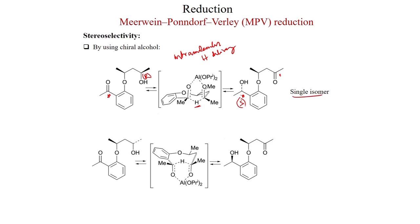On the other hand, if you consider the alcohol where the stereochemistry is just opposite — earlier it was R, now it is S — the hydride delivery will take place from the other way. If you see these transition states, they are mirror images of each other. Whatever was up before (the oxygen, oxygen) is now down, and the hydride delivery takes place so that you get the R alcohol, which is also highly selective.